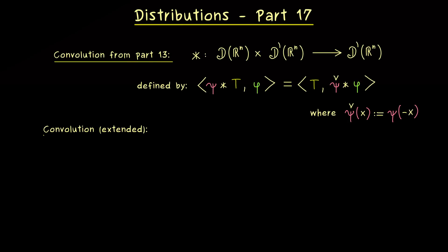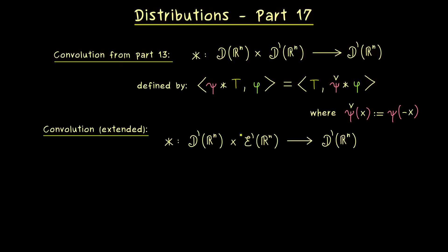We will extend this definition such that the convolution is defined for two distributions. The first entry can be any distribution, but we will weaken the second entry a little bit — we will only allow distributions with compact support, which are denoted by e'. The outcome of this convolution is still a general distribution in d'. Having one distribution with compact support makes the whole convolution possible, and this can be extended even further in a different video.